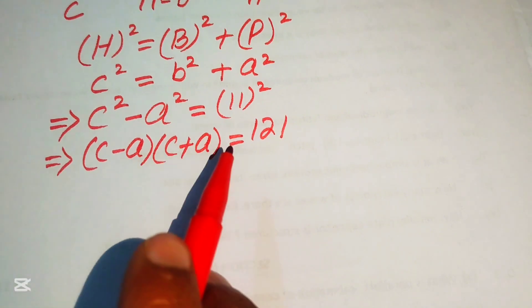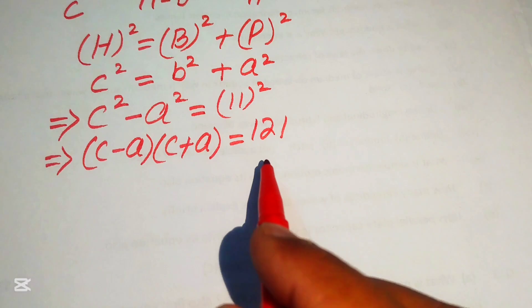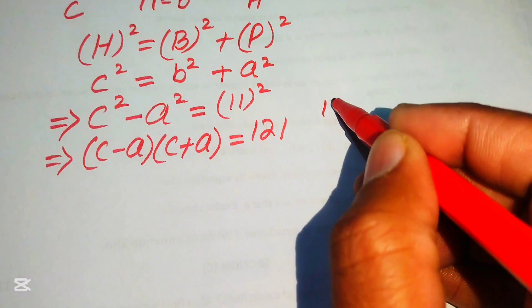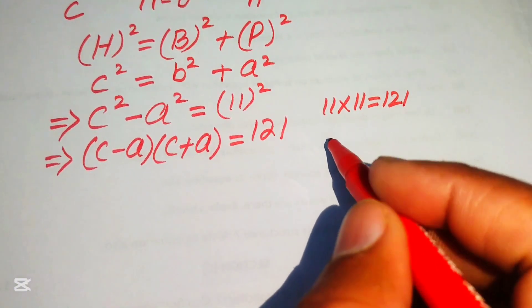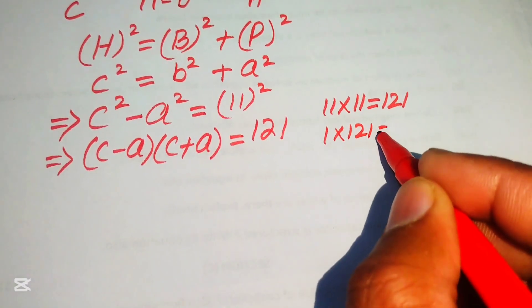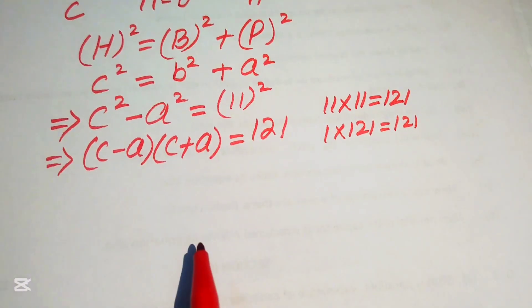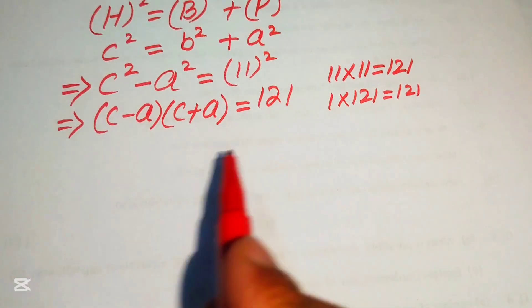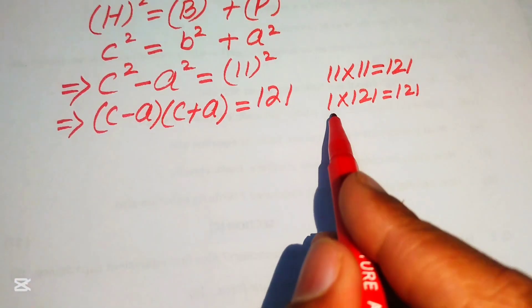On the left-hand side, two factors are multiplied together, but the right-hand side has only one factor. We convert the right-hand side into a product of two factors. We can write 121 as 11 × 11 = 121, and also as 1 × 121 = 121. So we have two possibilities.